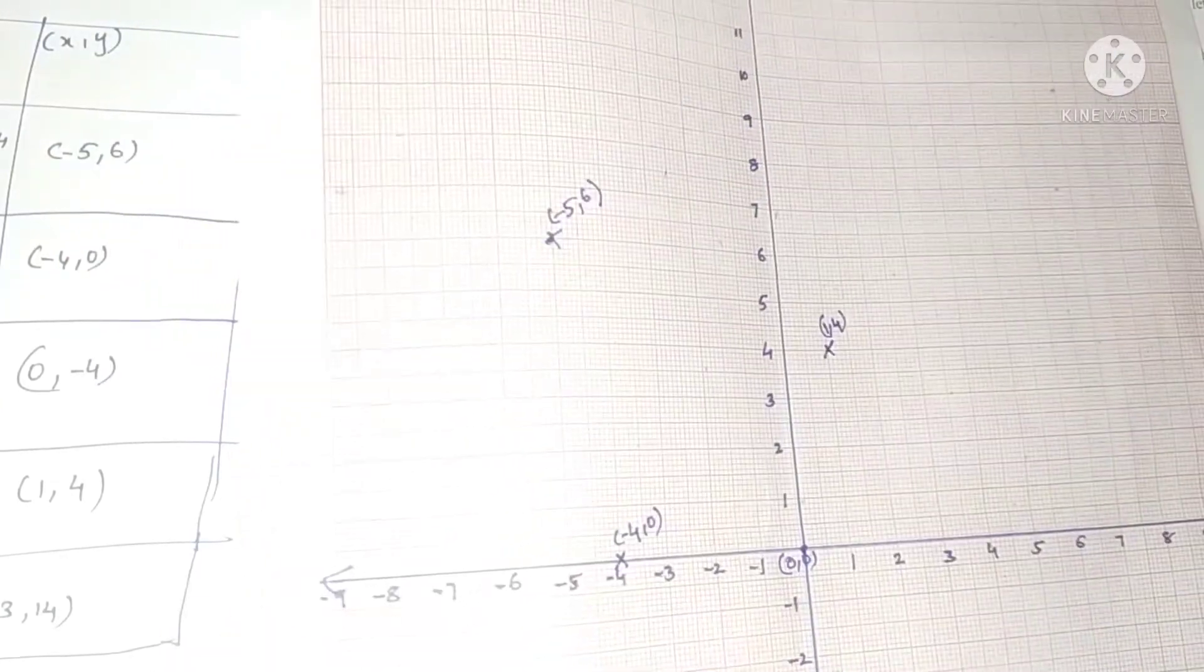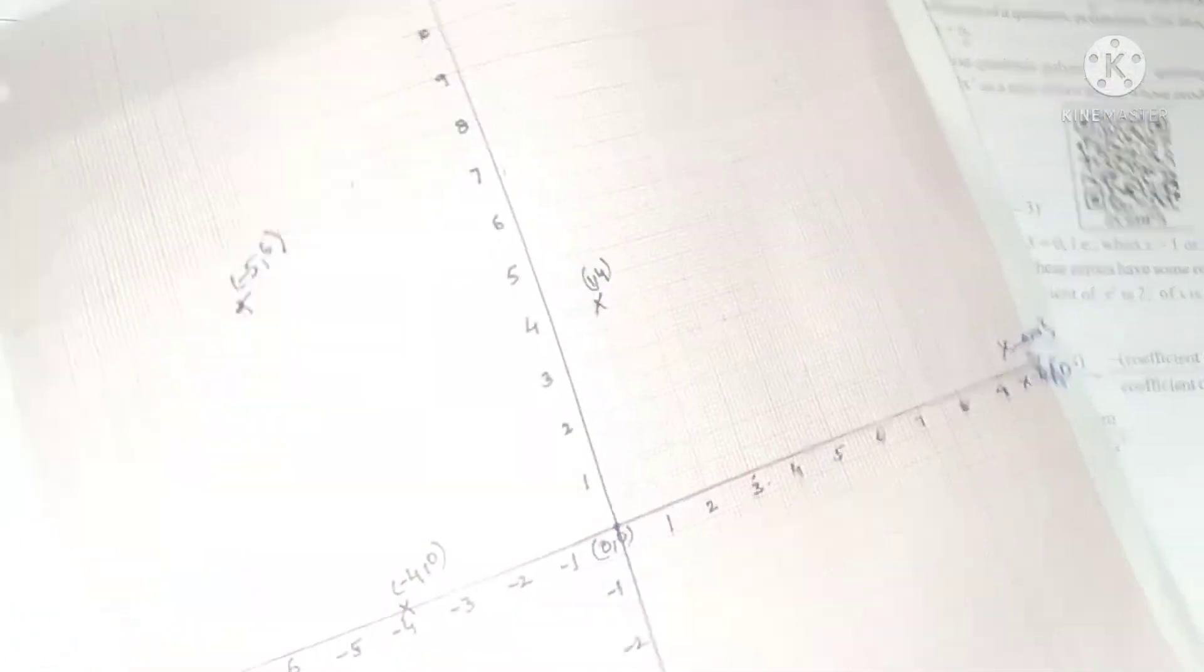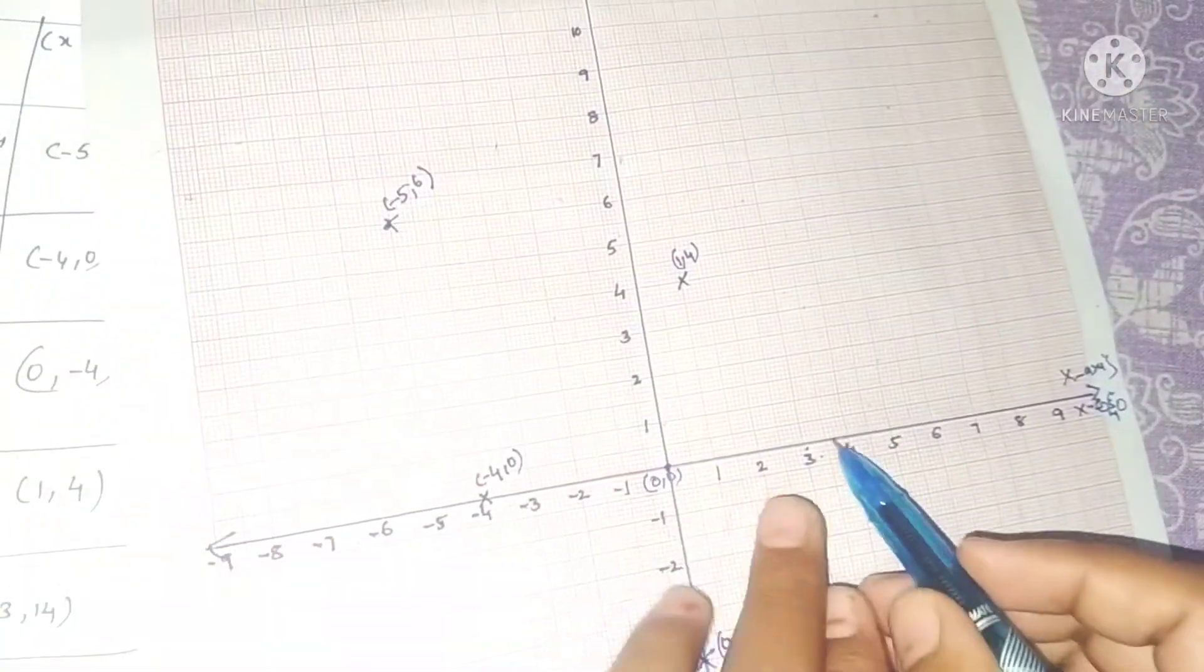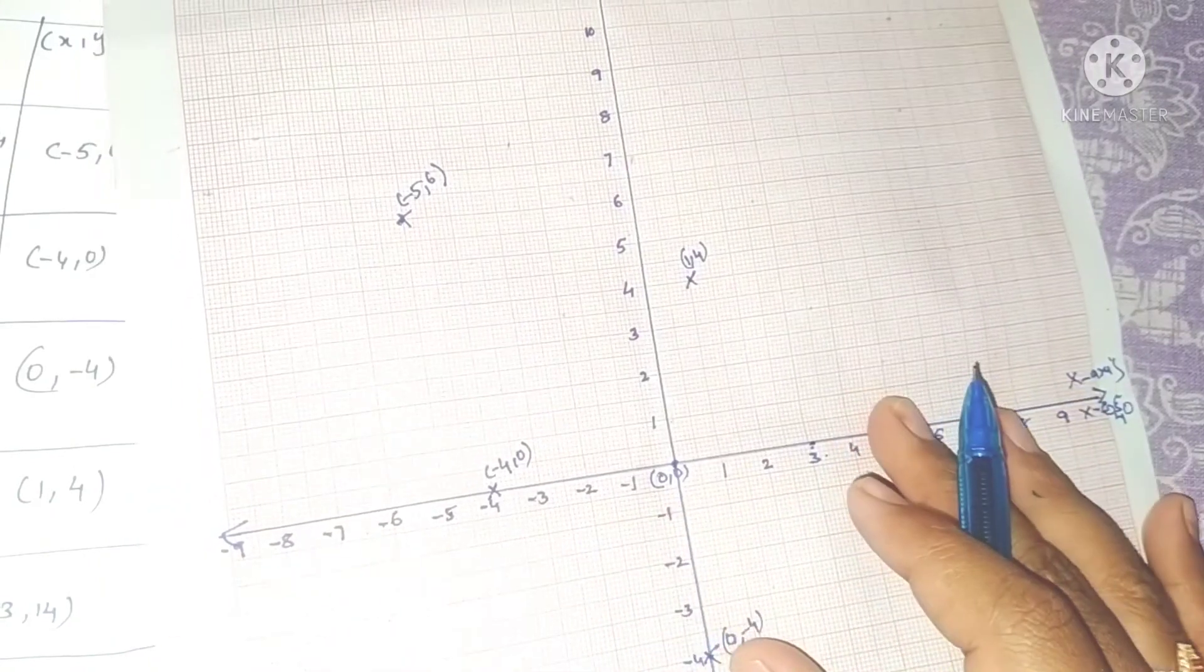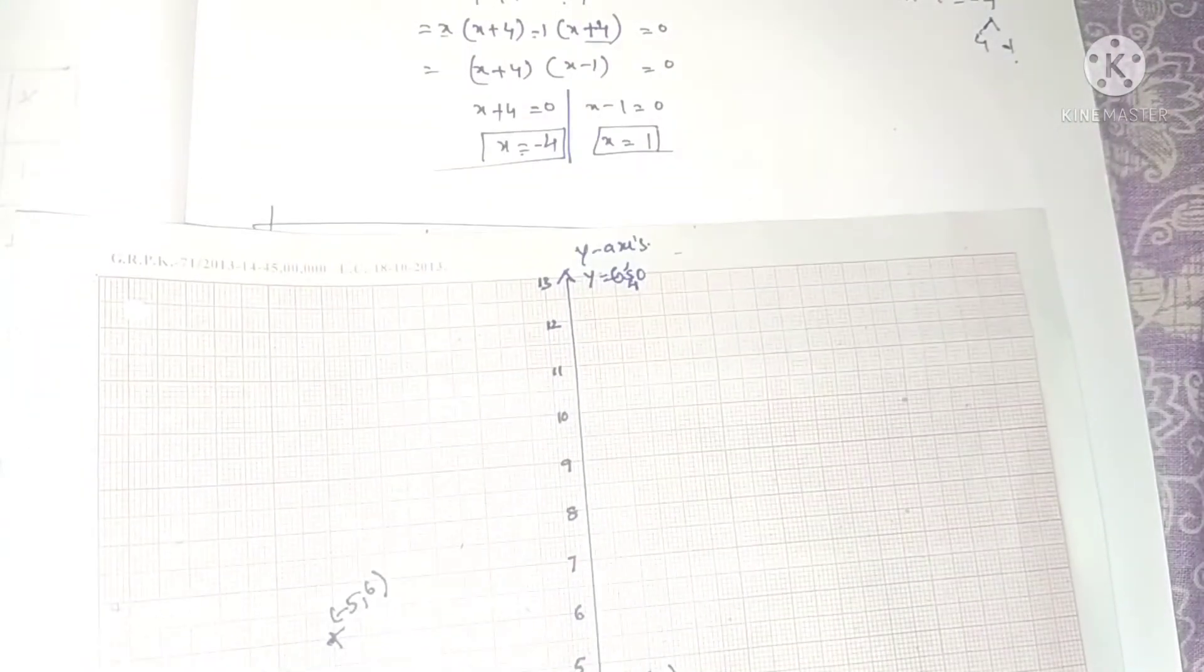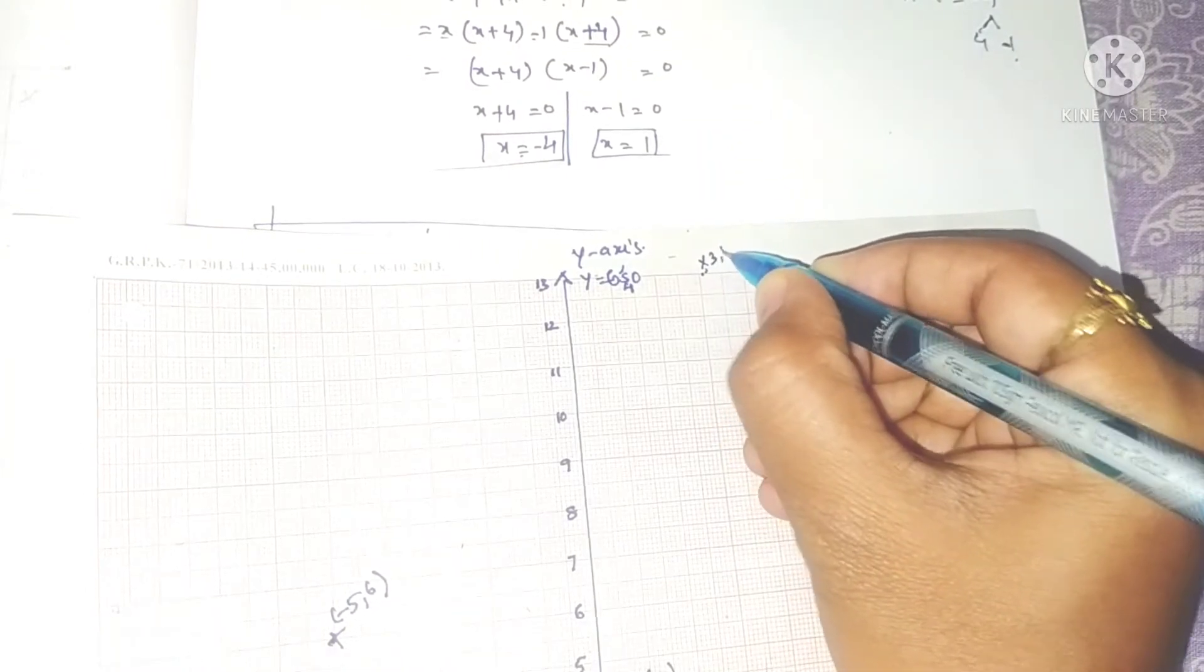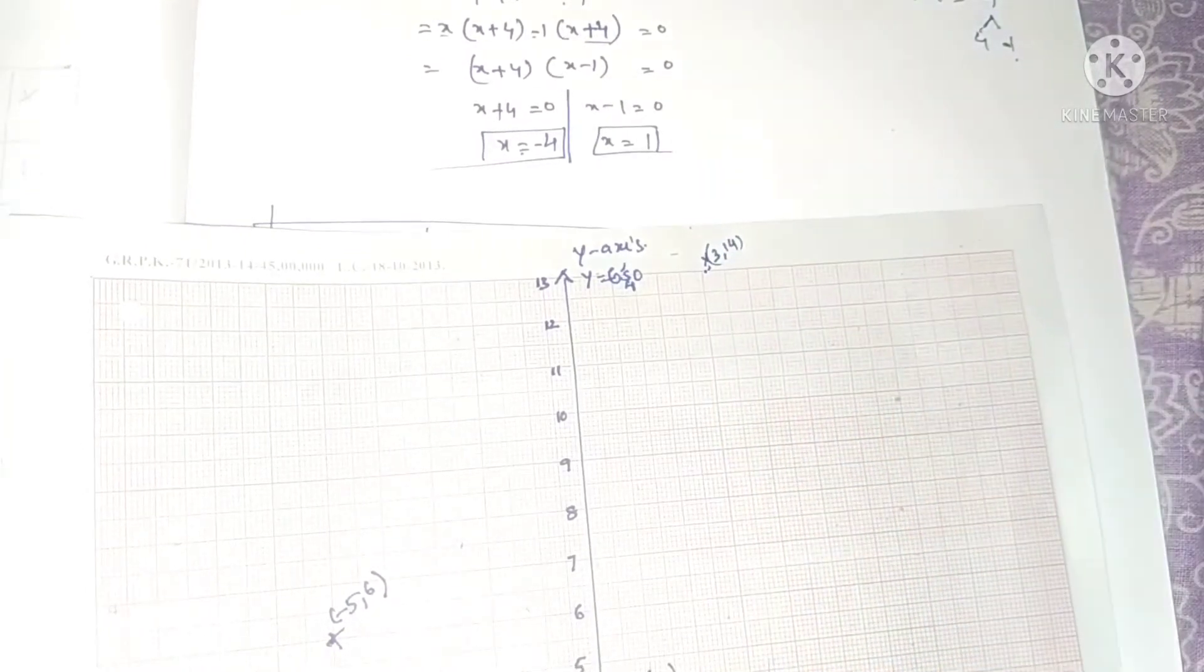Next, 3 comma 14. X value is 3 on the x-axis, and when we take 3, y value is 14. So the point is up here at 3 comma 14.